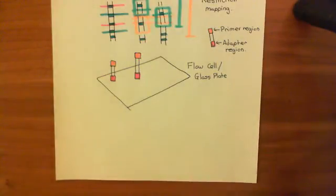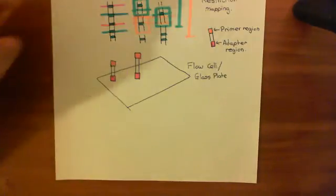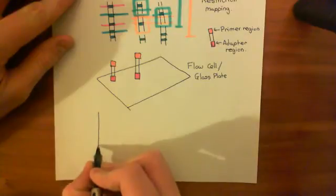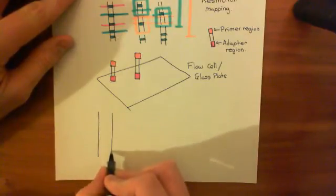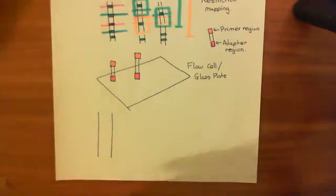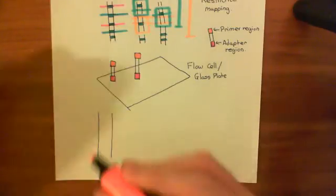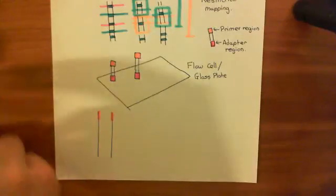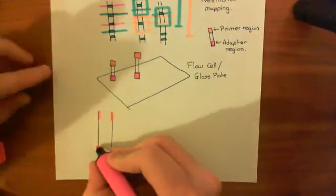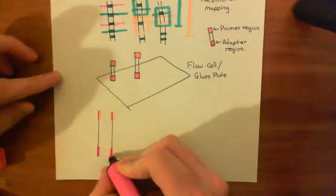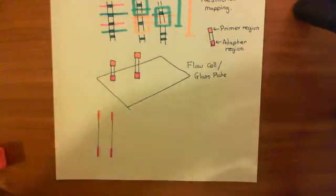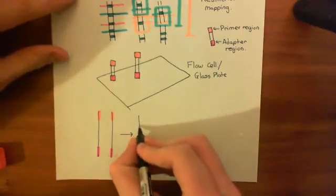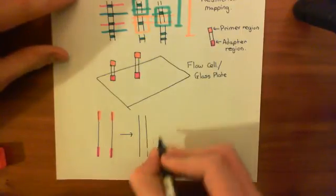I'm just going to remind you of the principles of PCR. So let's take our fragment here with its primer region and its adapter region. Here's our fragment — let me just highlight the different bits. So here's our primer region at the top, and here's our adapter region at the bottom. We want to copy this — we want to go from having one piece to having two of these.